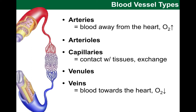We will also have two other types of vessels that we need to know. Arterioles are simply smaller versions of arteries — they are in between arteries and capillaries, so not quite arteries but not quite capillaries either. And the same goes for venules: they are larger than capillaries but smaller than veins.